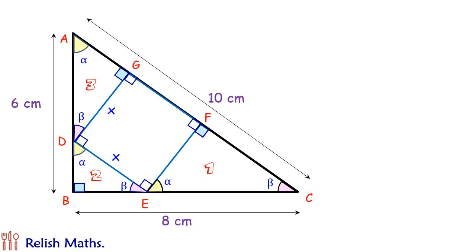Let's look at our triangle number 2, that is triangle DBE. This triangle is similar to triangle ABC, that is the bigger triangle. So on comparing their sides, DB upon DE is equivalent to AB upon AC.